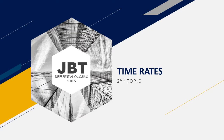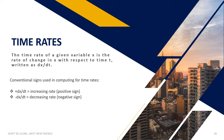Now we move to time rates. The time rate of a given variable x is the rate of change of x with respect to time t, written as dx/dt. Positive values indicate increasing quantities; negative values indicate decreasing quantities.